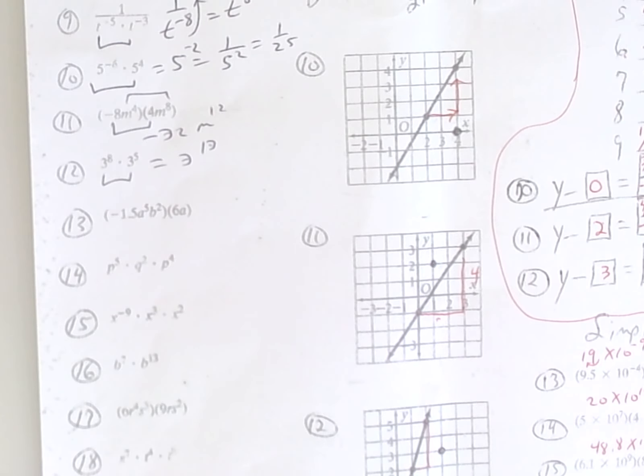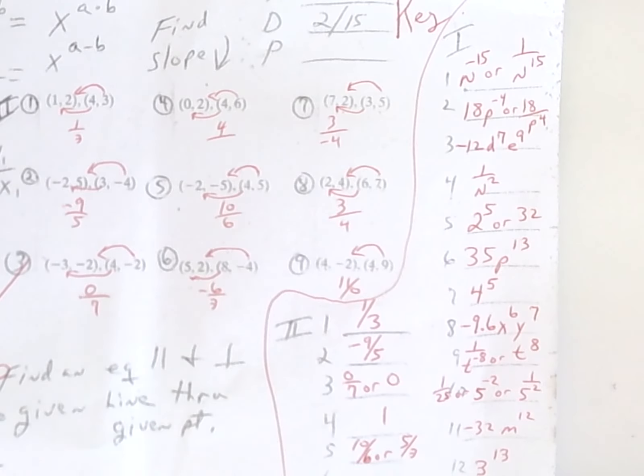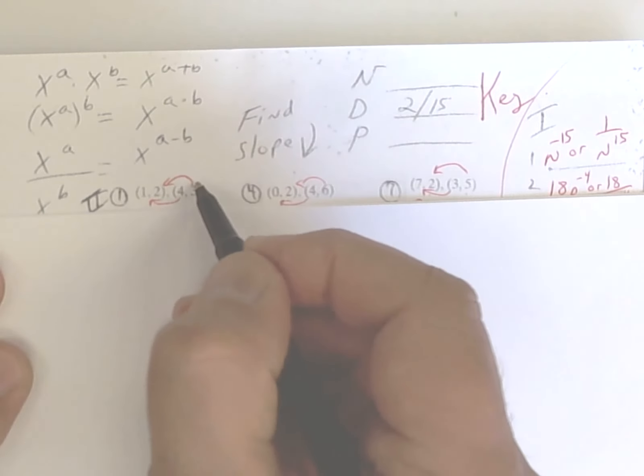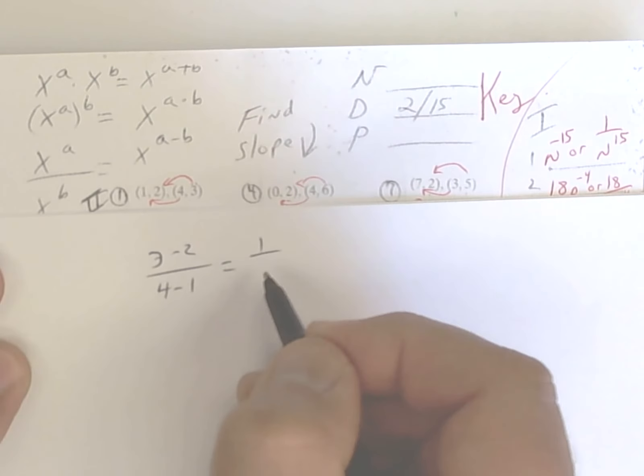All right, I'm going to skip a little bit. Let's go to slope. On slope, it's going to be y minus y. So 3 minus 2 over 4 minus 1, x minus x. So it's 1 over 3.